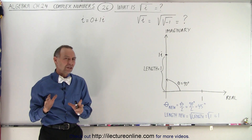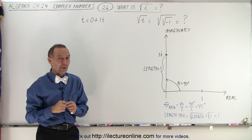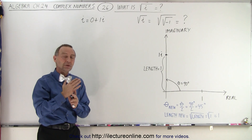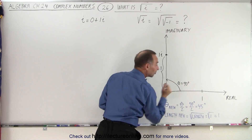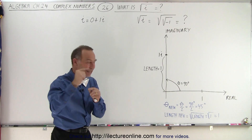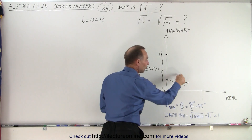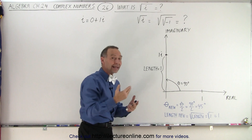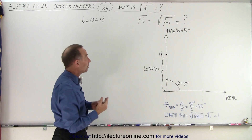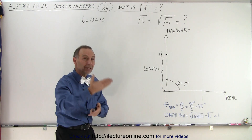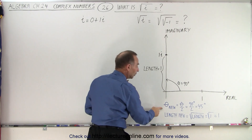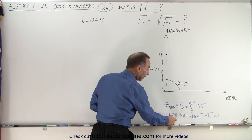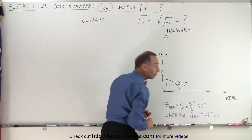We learned an interesting technique in the previous video. When we took a complex number and we squared it, we doubled the angle reference to the real axis, and we took the length from the origin to the original point and we squared that length to get the length of the new point. Now when we're taking the square root, we work in reverse. The new angle will now be half the original angle and the new length will be the square root of the old length.